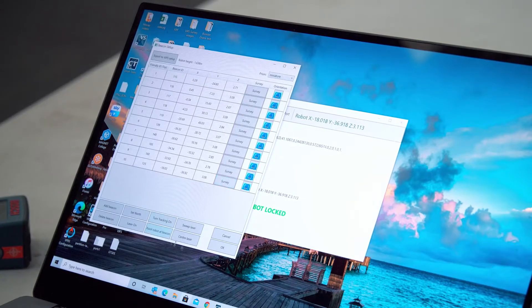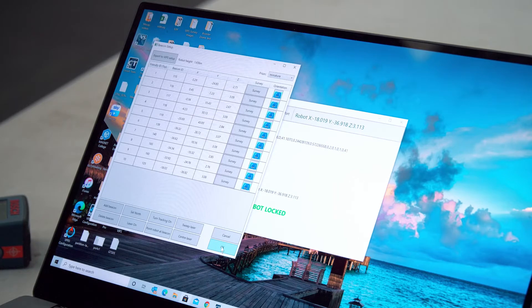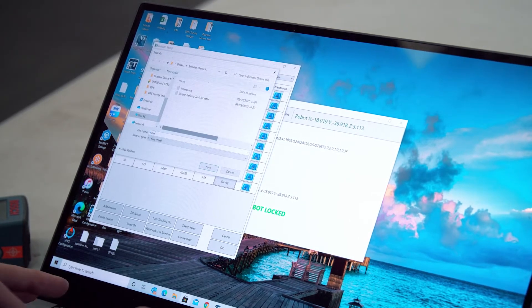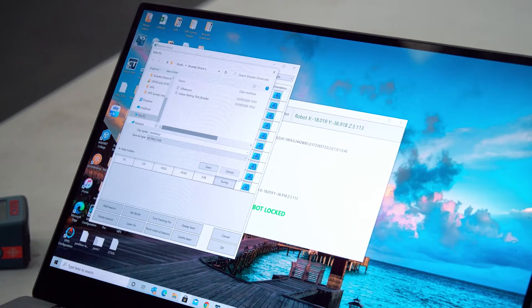Repeat this process for all the beacons in your setup. Once you've carried out the full survey, click the Export to VIPS Setup button and save the survey file.